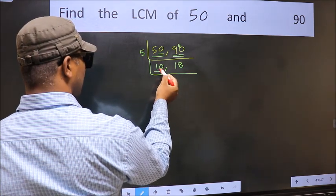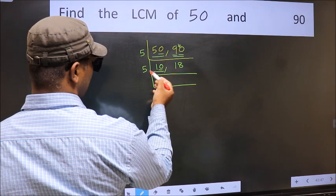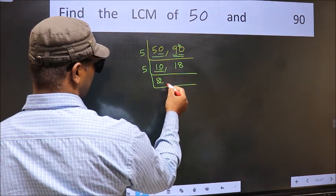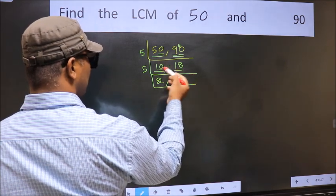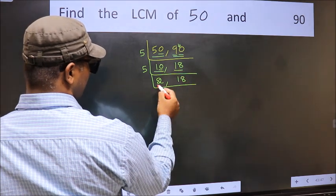Now here we have 10, last digit 0, so take 5. When do we get 10 in 5 table? 5 twos 10. The other number 18, not divisible by 5, so we write it down as it is.